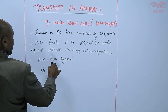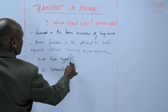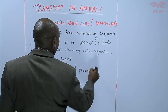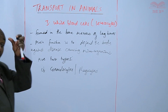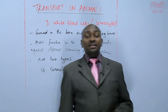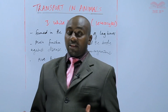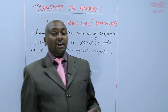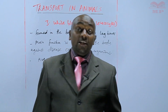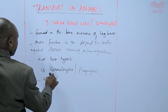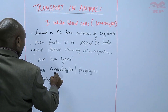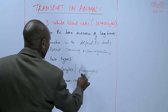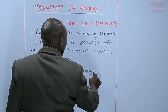The first type is called granulocytes or phagocytes. This type deals with disease-causing microorganisms by engulfing — they change their shape to engulf the disease-causing microorganism, digest it, and then finally destroy it. These ones engulf disease-causing microorganisms.